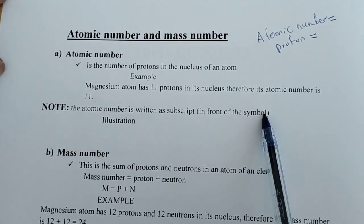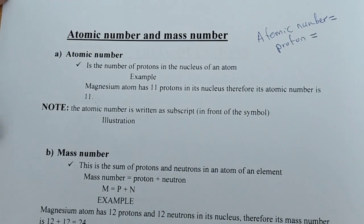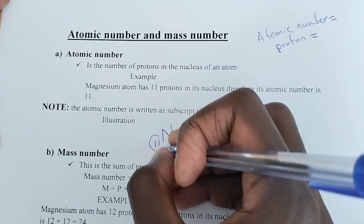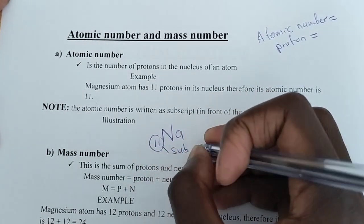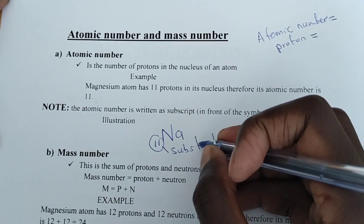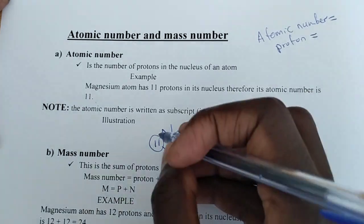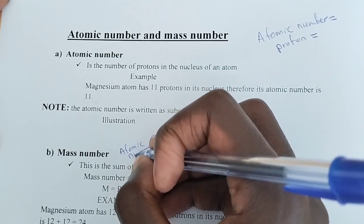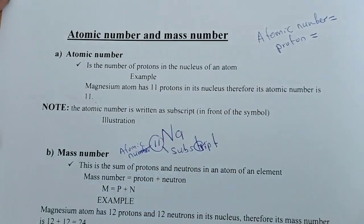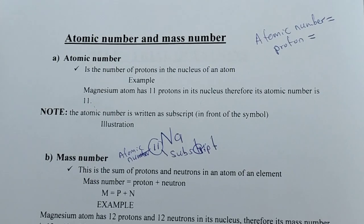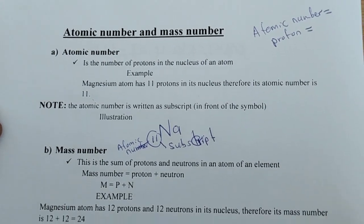Note that the atomic number is written as a subscript, meaning at the lower base in front of the symbol. For example, for sodium, the subscript position in front of the element symbol shows the atomic number. So for all elements, the subscript in front of the symbol represents the atomic number.